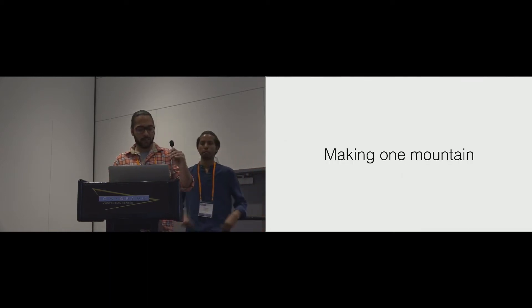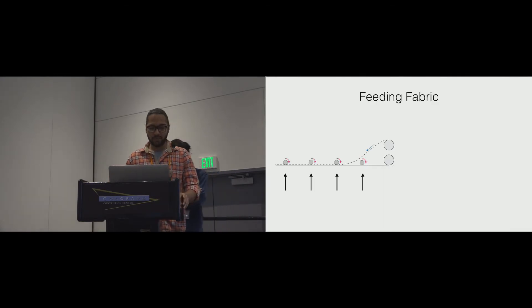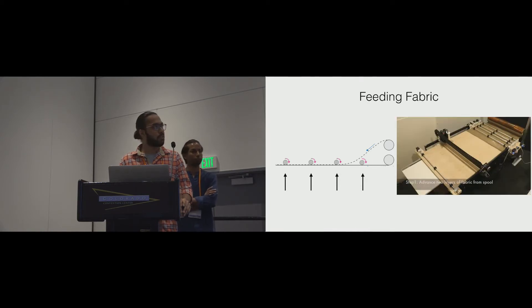Let's look at how one of these mountains is made on the machine. The first step in the process of forming a mountain is feeding in two layers of fabric, using the rollers as we show in this figure. Here's the machine performing this action.